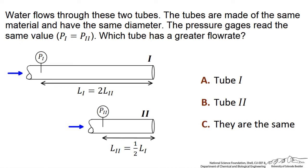We know that P1 minus P atmosphere is the same as P2 minus P atmosphere, because we are told P1 and P2 are the same.